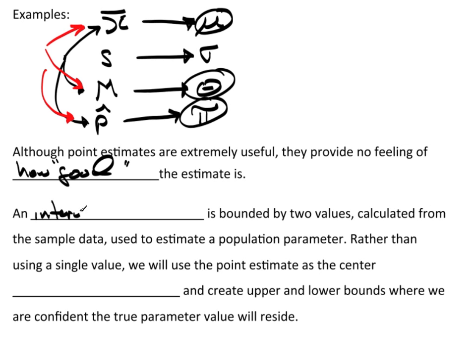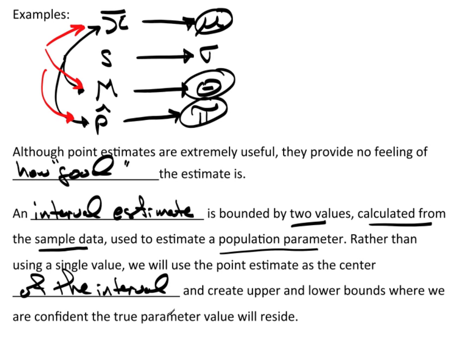An interval estimate is bounded by two values. And what's important here to understand is that those values are actually calculated from the sample data. Since they're calculated from the sample data, they're sample statistics. The very loose and general definition of a sample statistic is anything that's calculated from sample data. And we use those to estimate a population parameter. So rather than using a single value, we're going to use the point estimates as the center of the interval.